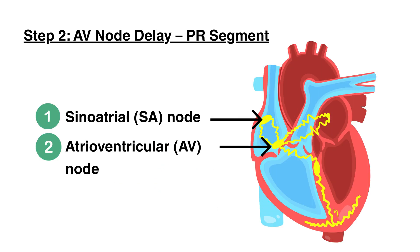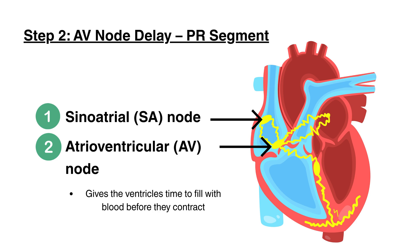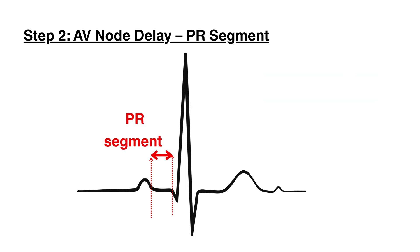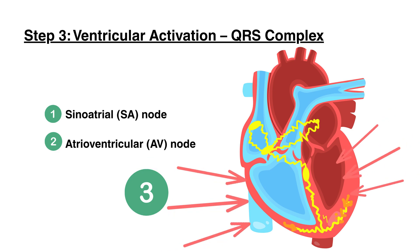Step 2: AV Node Delay and the PR Segment. The electrical signal then reaches the atrioventricular (AV) node, where it pauses briefly. This delay gives the ventricles time to fill with blood before they contract. On the ECG, this pause is shown as the PR segment.